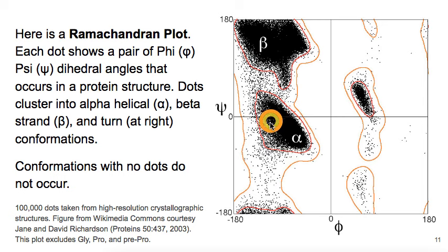This cluster of dots represents alpha helices, while this cluster of dots represents beta strands that form beta sheets, and here we have turns. Notice that there are large areas of the plot completely devoid of dots. These conformations simply do not occur.